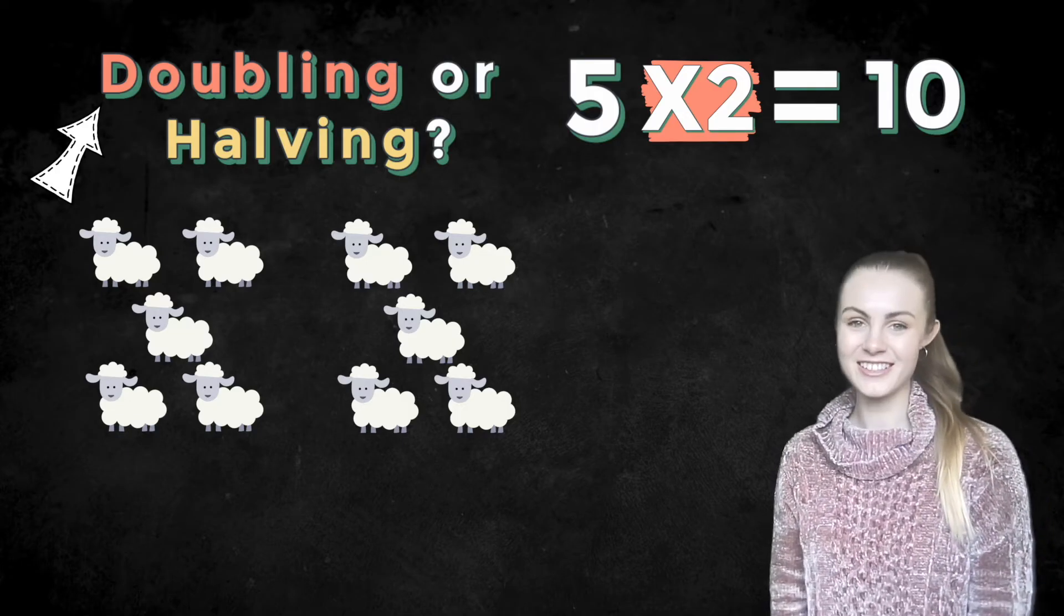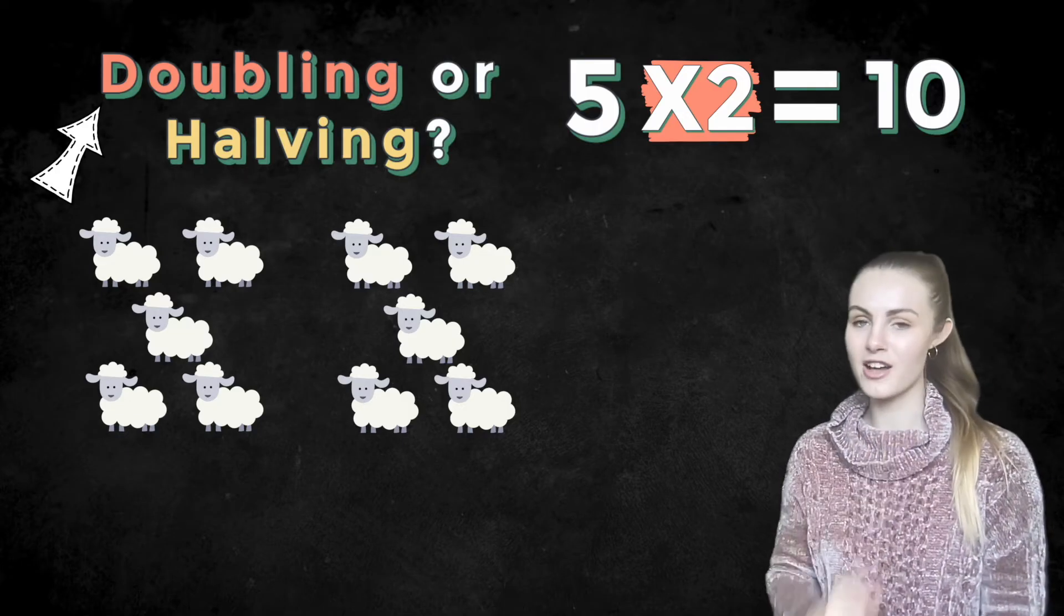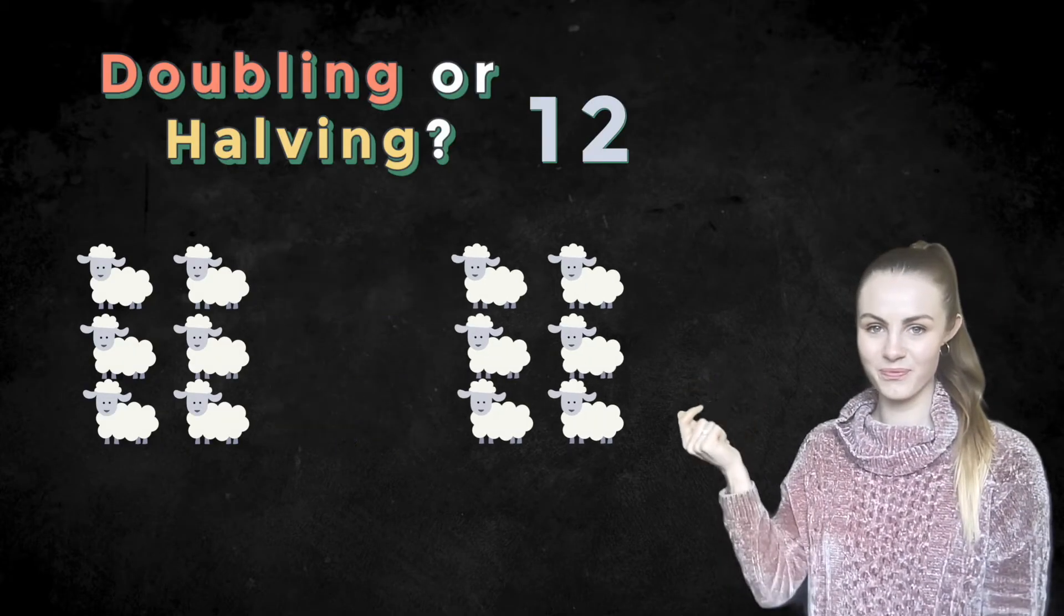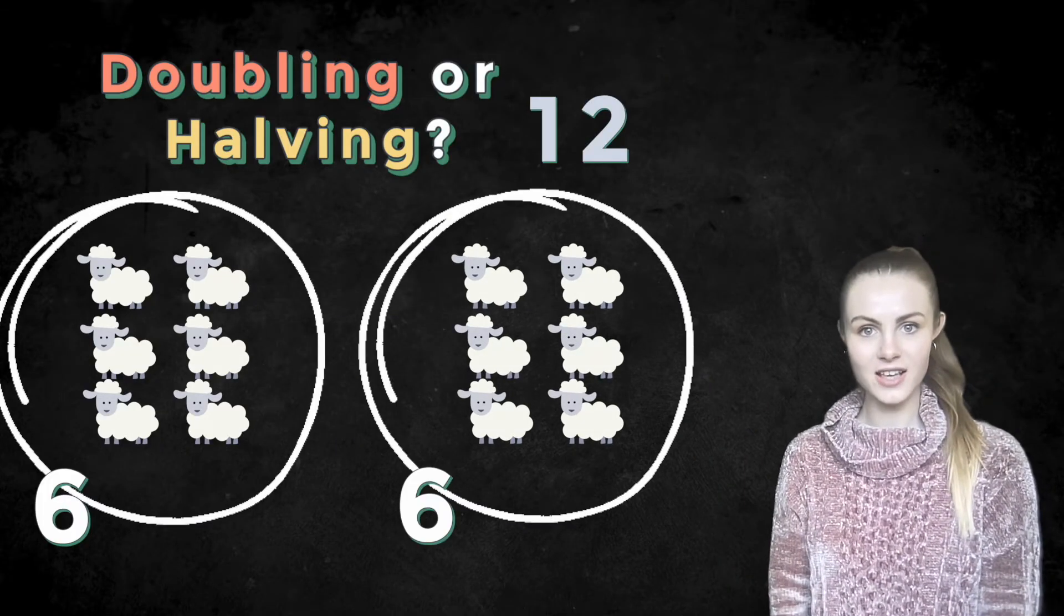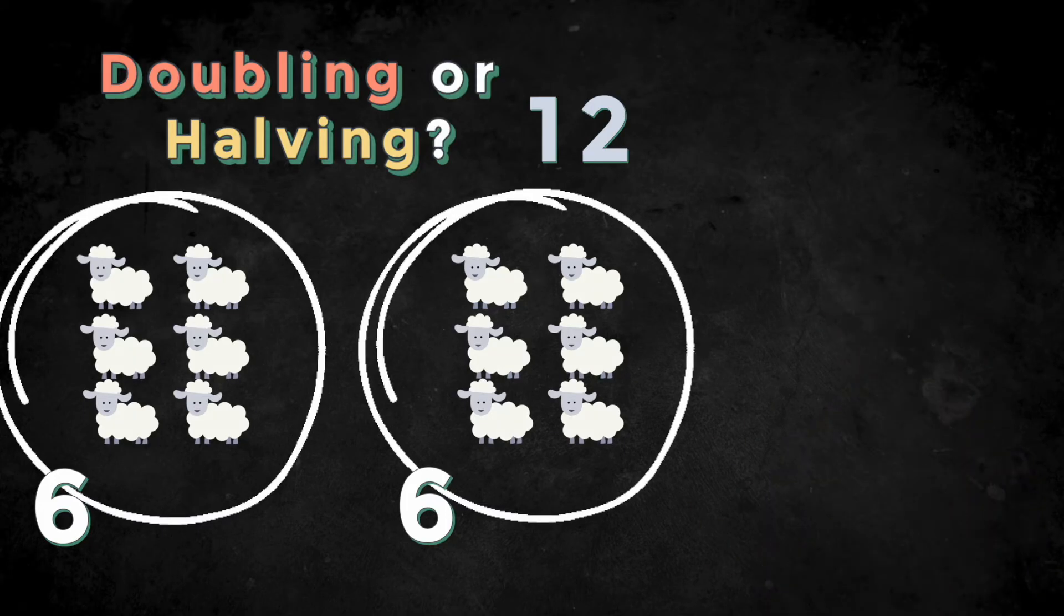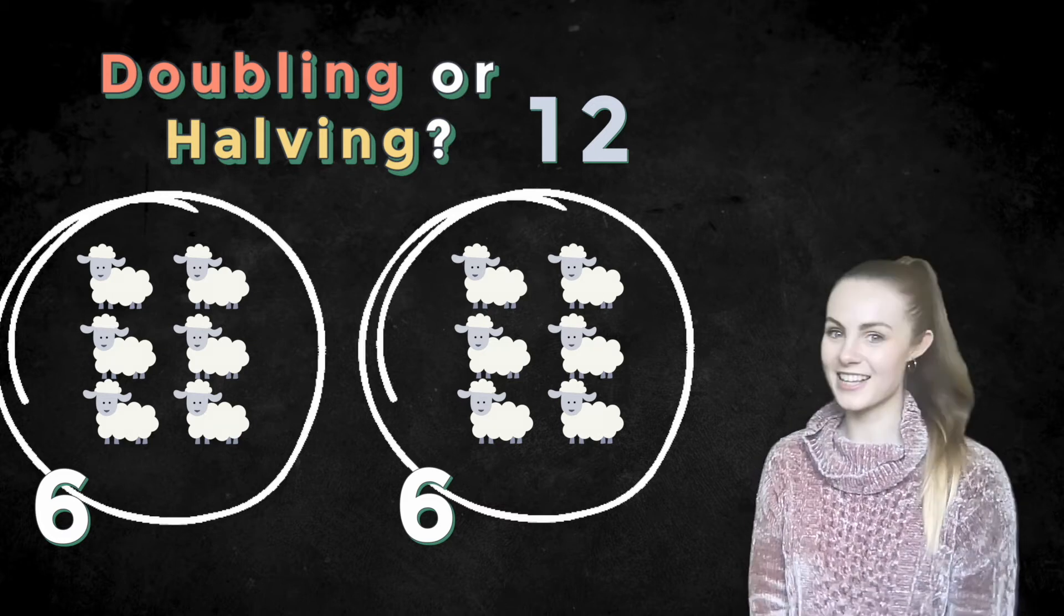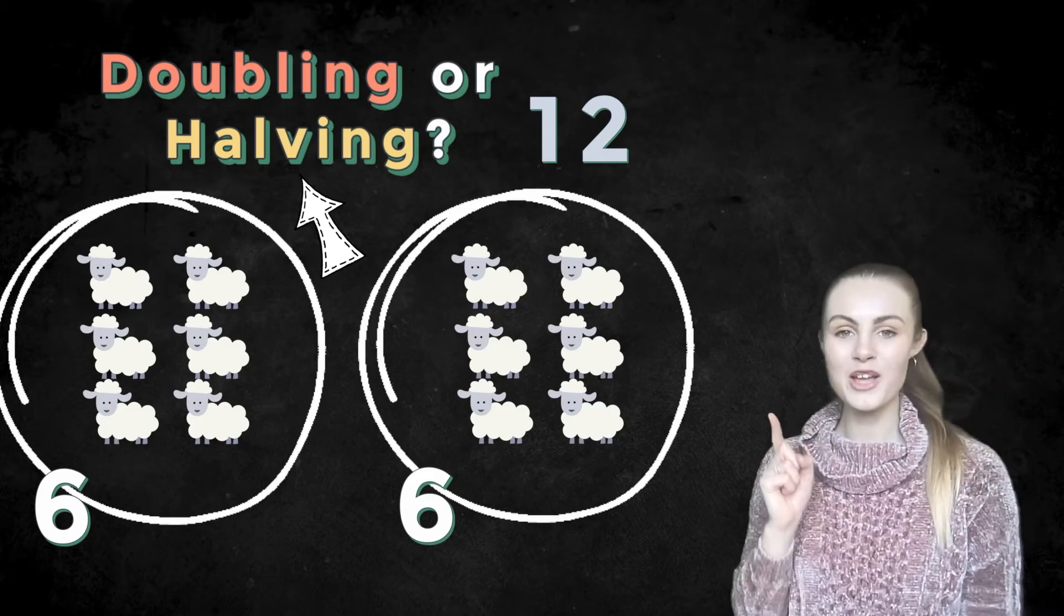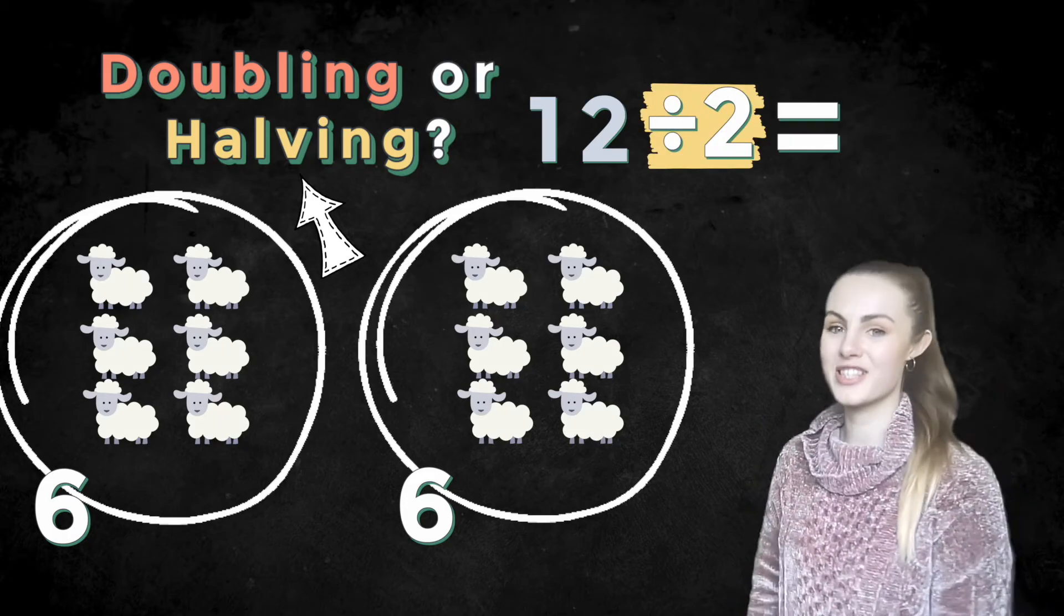Your turn again. This time I'm starting with 12 and now I've got six. Have I doubled or have I halved? Welcome back. Yes, you're absolutely right. I have halved my number. I have done 12 divided by two equals six.